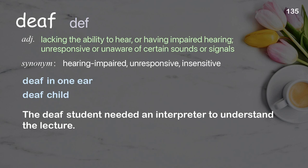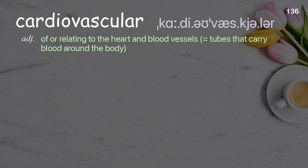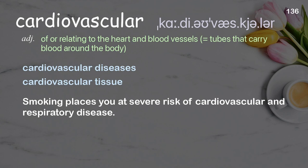Cardiovascular: of or relating to the heart and blood vessels — tubes that carry blood around the body. Examples: cardiovascular diseases, cardiovascular tissue. Smoking places you at severe risk of cardiovascular and respiratory disease.